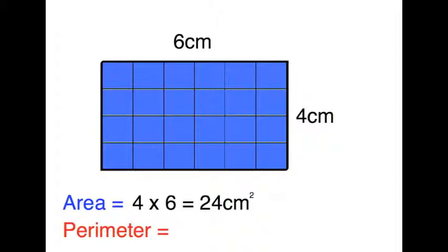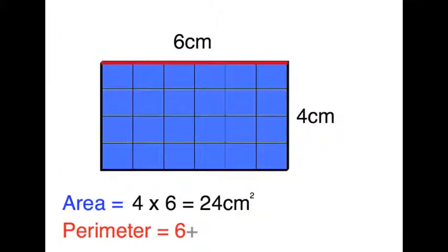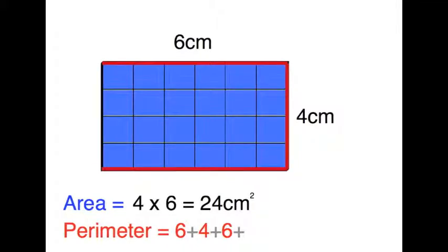All right, perimeter. Peter Perimeter wants to walk around the outside. So he's going to walk across the top first, which is six centimetres. Then he'll walk down the side, which is four centimetres. So it's six plus four, across the bottom is six again.